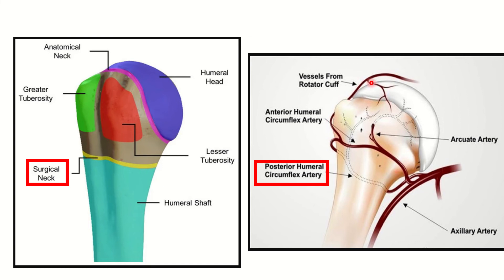In this picture we can see the humeral head, the lesser and greater tuberosity, and this is the surgical neck level. If you see here, at the surgical neck level, we can see a vessel, and this vessel is the posterior circumflex humeral artery, also called the posterior humeral circumflex artery.